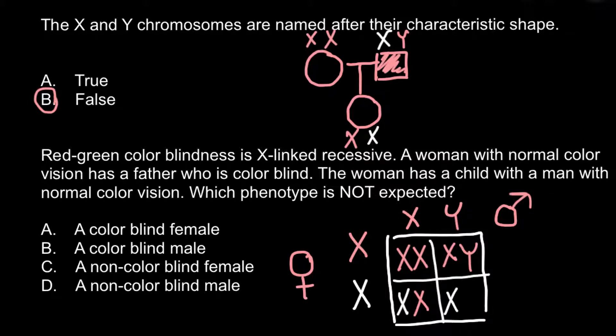As you can see, 50% of the progeny would be males and 50% of the progeny would be females. Now we can return to our answer and choose the correct one. The question is: which phenotype is not expected?